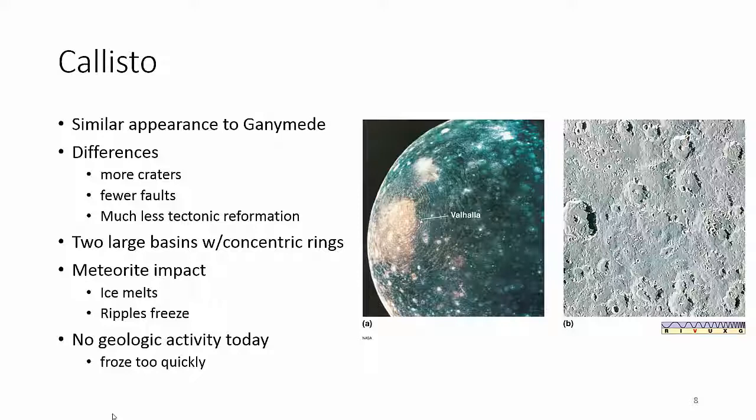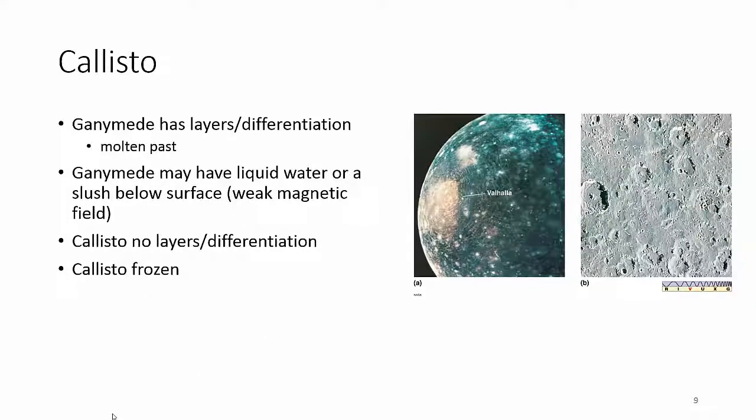They think there's no current geologic activity on Callisto — there might have been in the past, but now it freezes too quickly. If it can freeze before ripples settle down, it'll obviously freeze before any tectonic activity with ice plates can occur. Ganymede had distinct internal layers: a core, a mantle, an ocean, and then a layer of ice. Callisto, by contrast, is thought to have no layers — just ice all the way through.